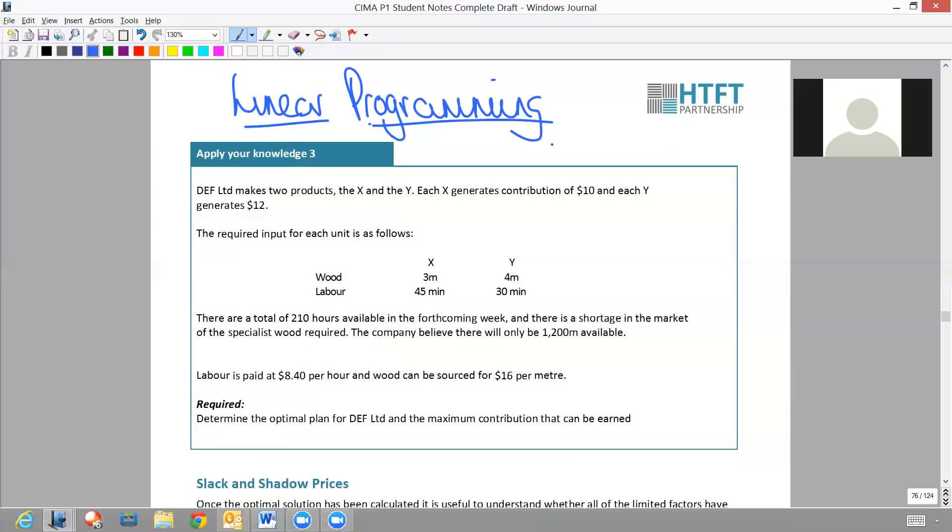I'm going to go quicker pace though than in Apply Your Knowledge 2 because we really did go through it there to the nth degree. Hopefully a lot of this now is starting to sink in for linear programming. We need to determine the optimal production plan and also the maximum contribution. In other words, you need to go all the way through your DOFF PIES in order that you can identify what the product mix will be and also how much contribution can be earned.